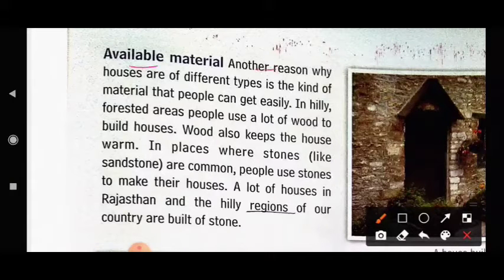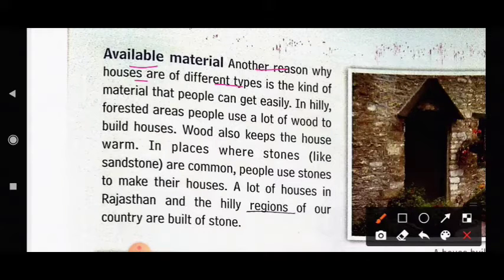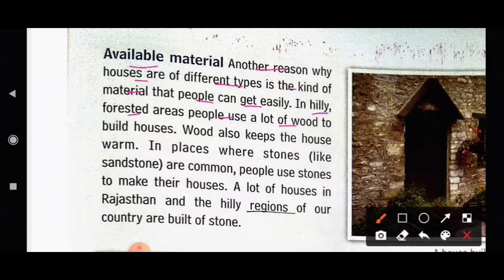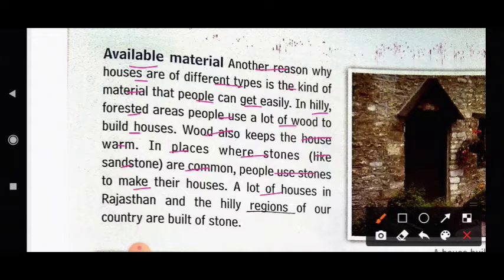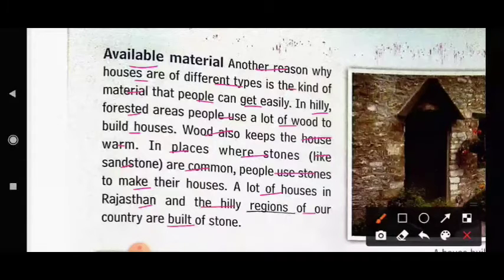Another reason why houses are of different types is the kind of material that people can get easily. In hilly, forested areas, people use a lot of wood to build houses. Wood also keeps the house warm. In places where stones like sandstone are common, people use stones to make their houses. A lot of houses in Rajasthan and the hilly regions of our country are built of stone.